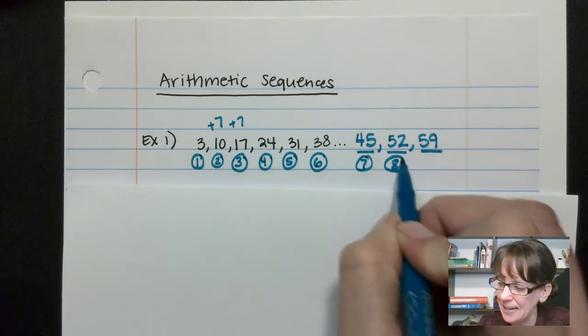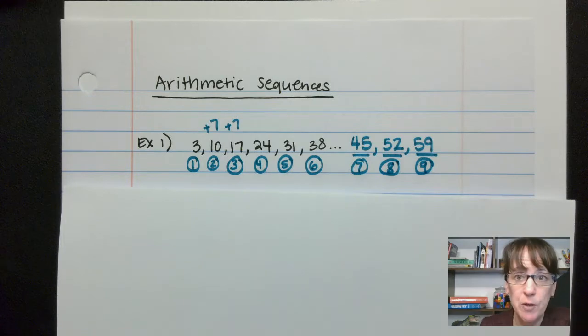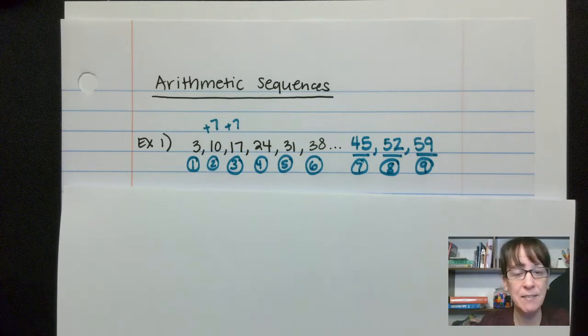Now, if I wanted you to figure out position 22, you would have to sit here and write all of these out in order to figure out, because all you're doing is taking the previous number and you're adding 7 to it.